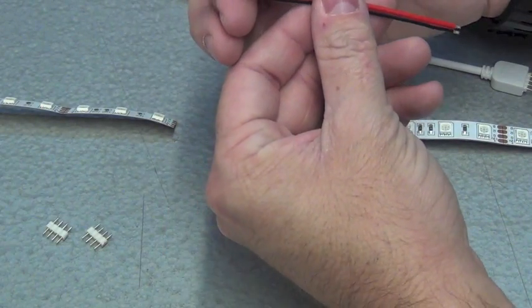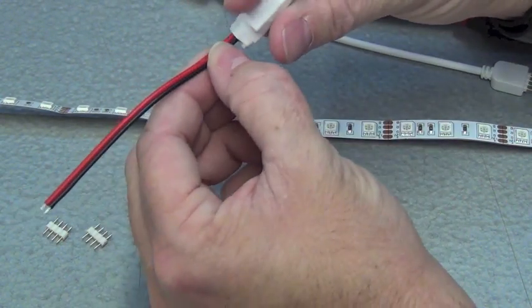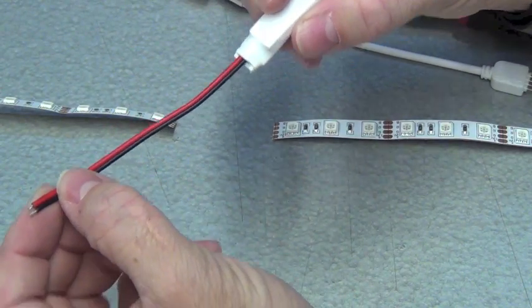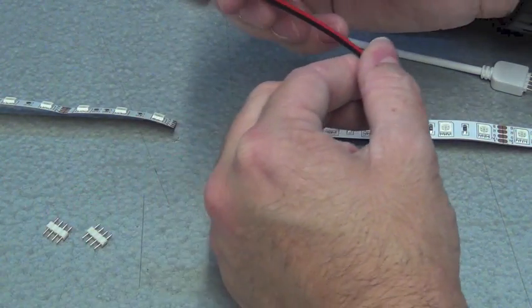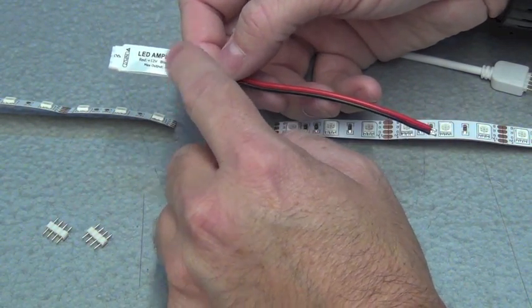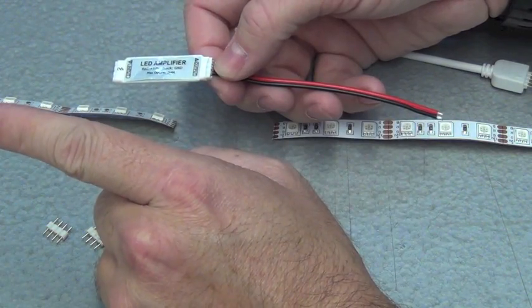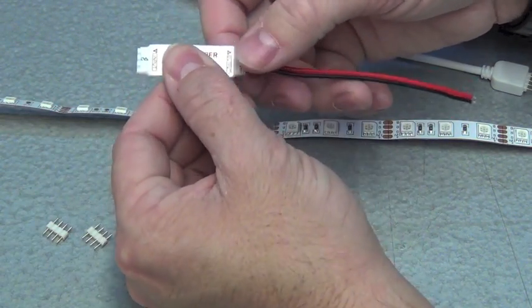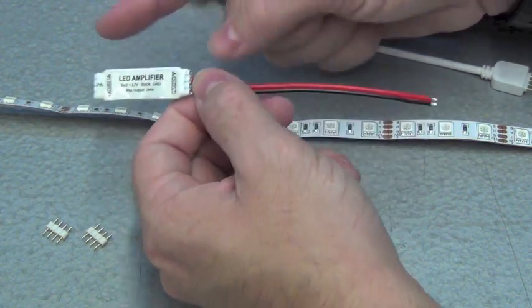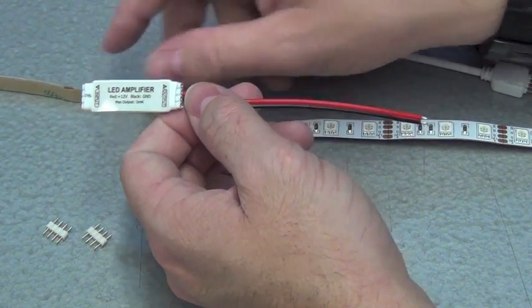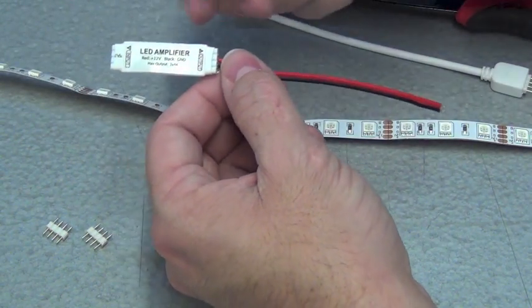You'll notice that the LED amplifier has a red and black wire coming off the bottom section of it, and that red and black wire is to add power to the amplifier as well as to the strip that's continuing on down your run. You'll want to make sure that your power supply is sized per the number of feet that you have in your LED strip that you're continuing on with.